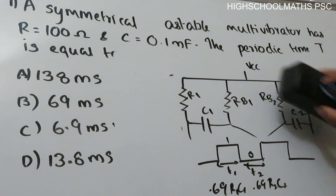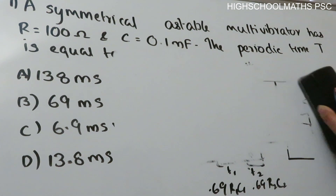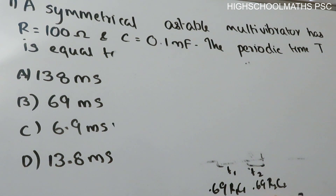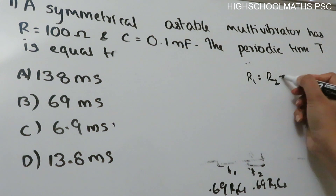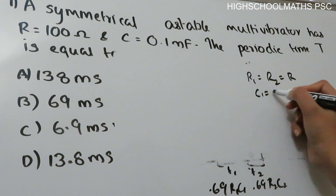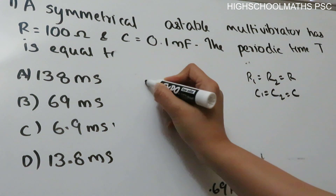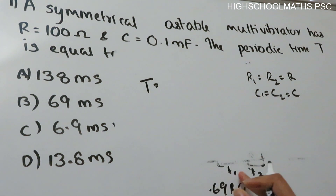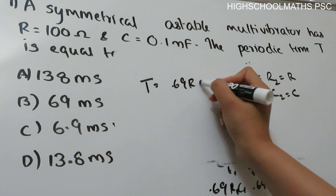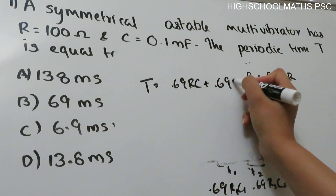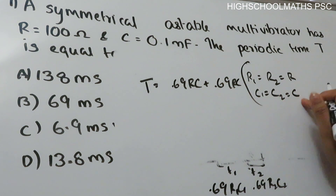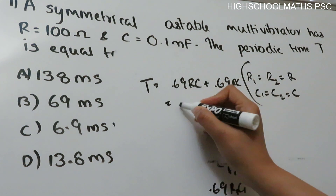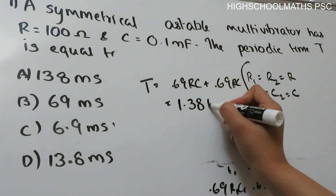For a symmetrical astable multivibrator, R1 equals R2 and C1 equals C2. So the total period T equals 0.69 RC plus 0.69 RC, which gives T equal to 1.38 RC.